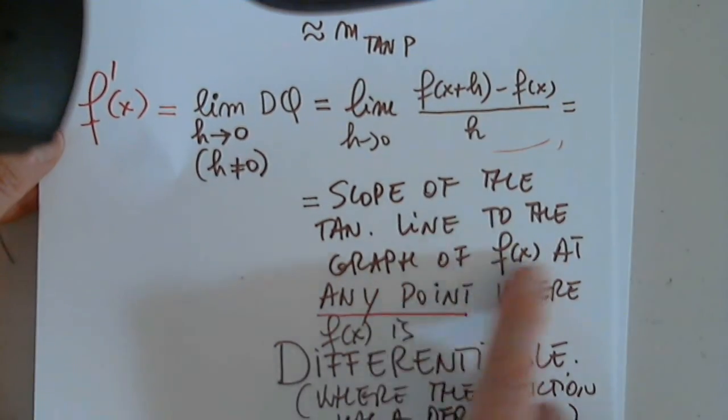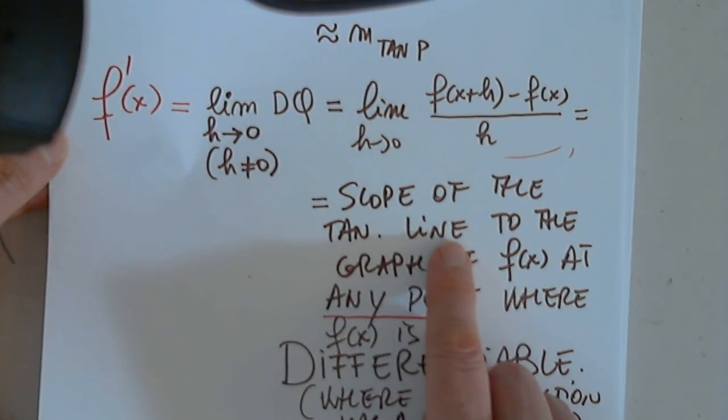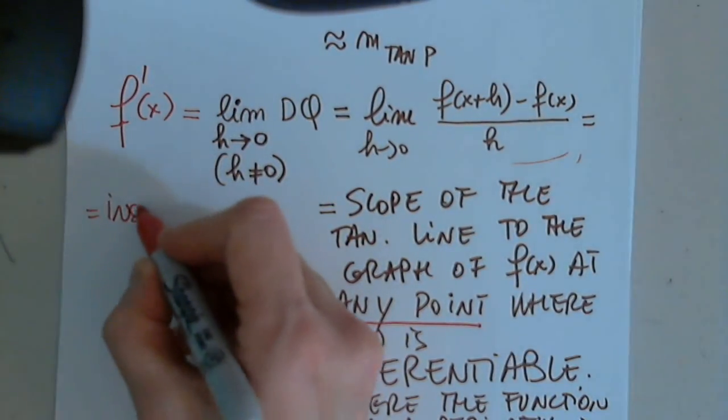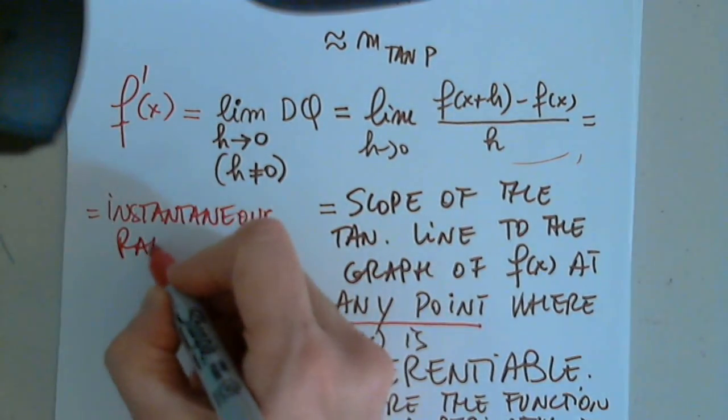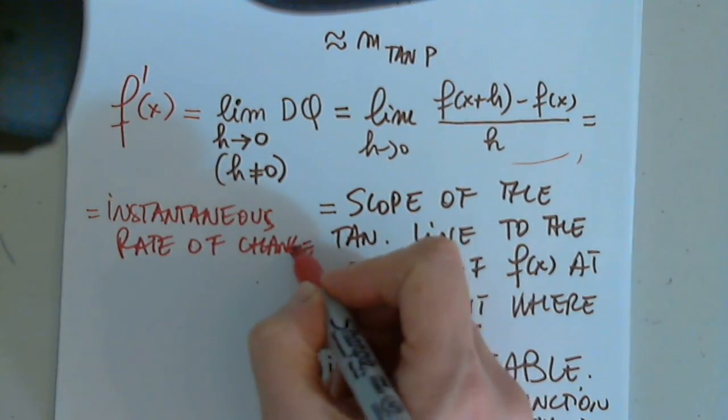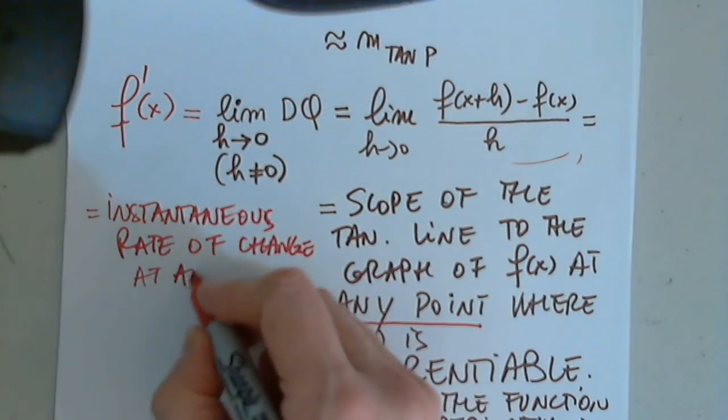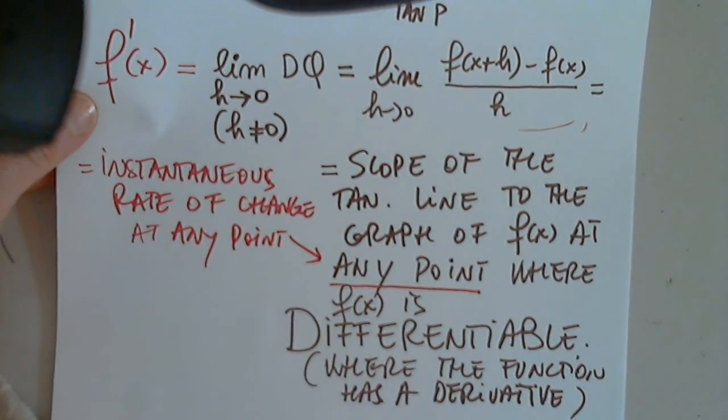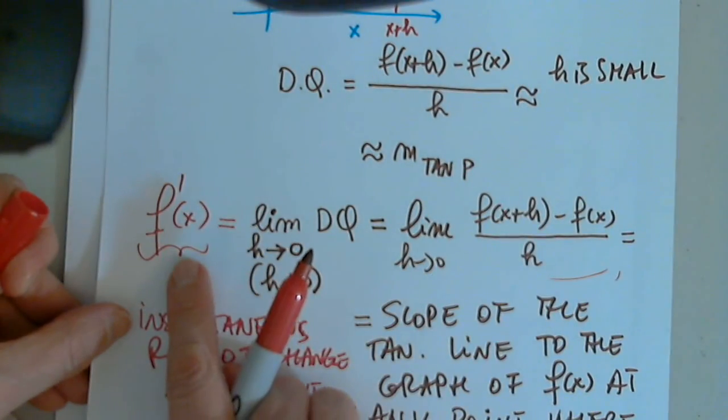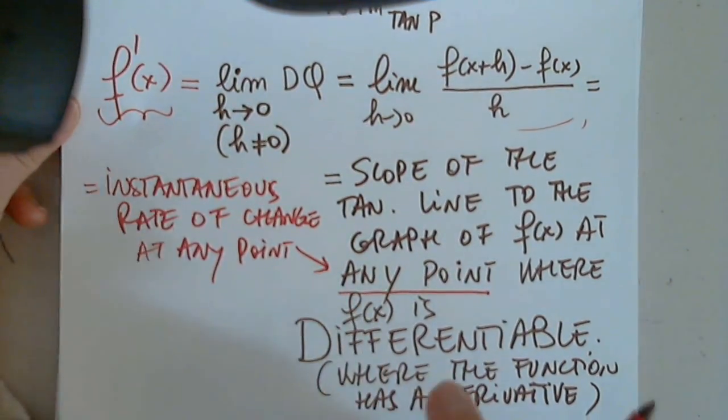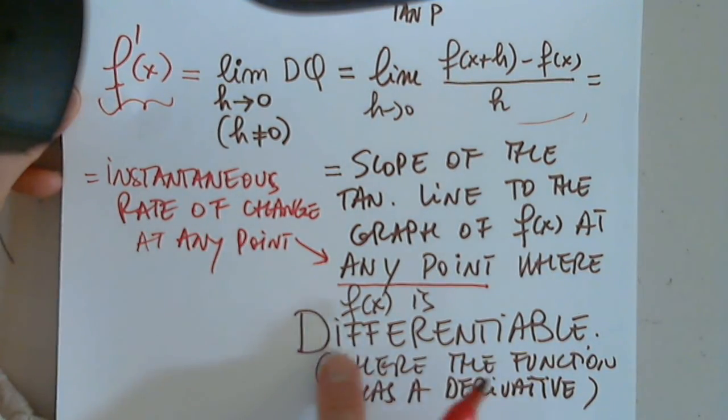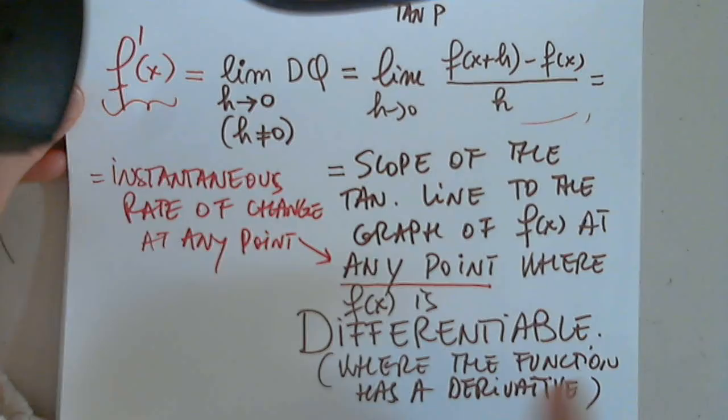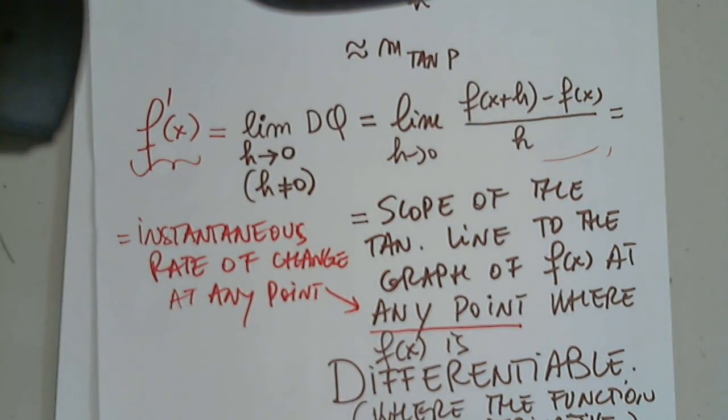What does it give? It gives the slope of the tangent line. But furthermore, what does the slope of the tangent line mean? The rate of change at that point, the instantaneous rate of change. So this is the same with instantaneous rate of change at any point where f of x is differentiable, where the function has a derivative or where the derivative exists. How come this function doesn't exist always? So that's why when the derivative exists, we say it's differentiable. But when its derivative does not exist at a point, we say the function itself is not differentiable at that point where the derivative does not exist.